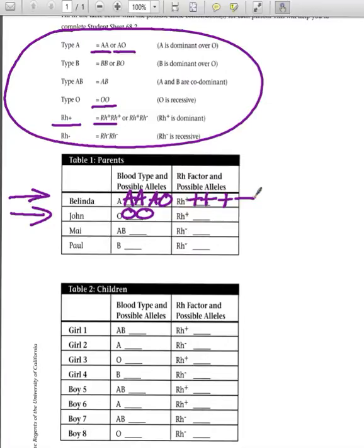Now taking a look down here at John, John has a Rh factor of positive as well, and there obviously are two different ways to get it. There's positive, positive, just like Belinda, or positive, negative.